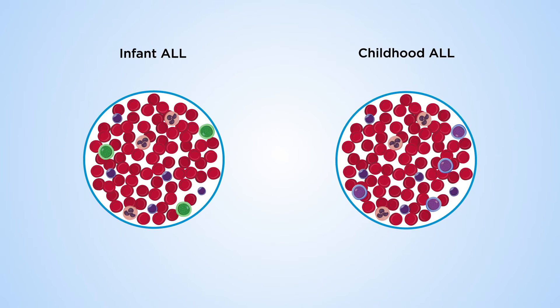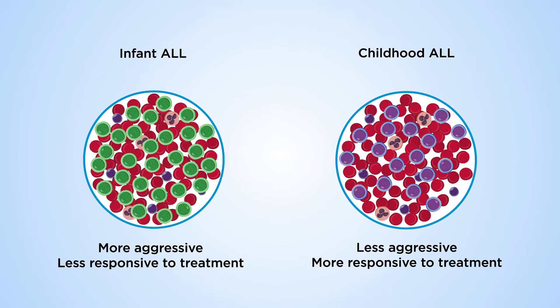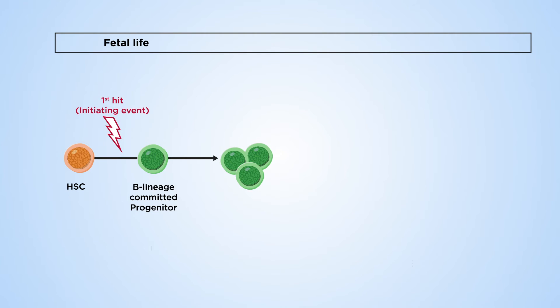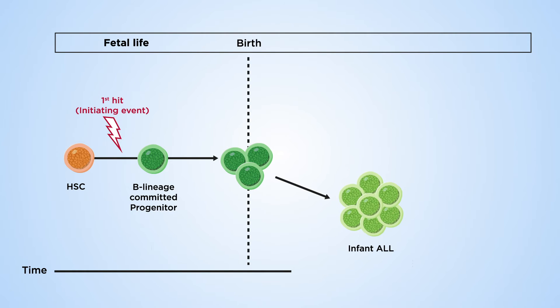Compared to older children, infant ALL is more aggressive and harder to treat. Infant ALL is distinct from older childhood ALL in that it usually requires only one genetic hit, pre-birth, to develop into aggressive, chemo-resistant leukemia.